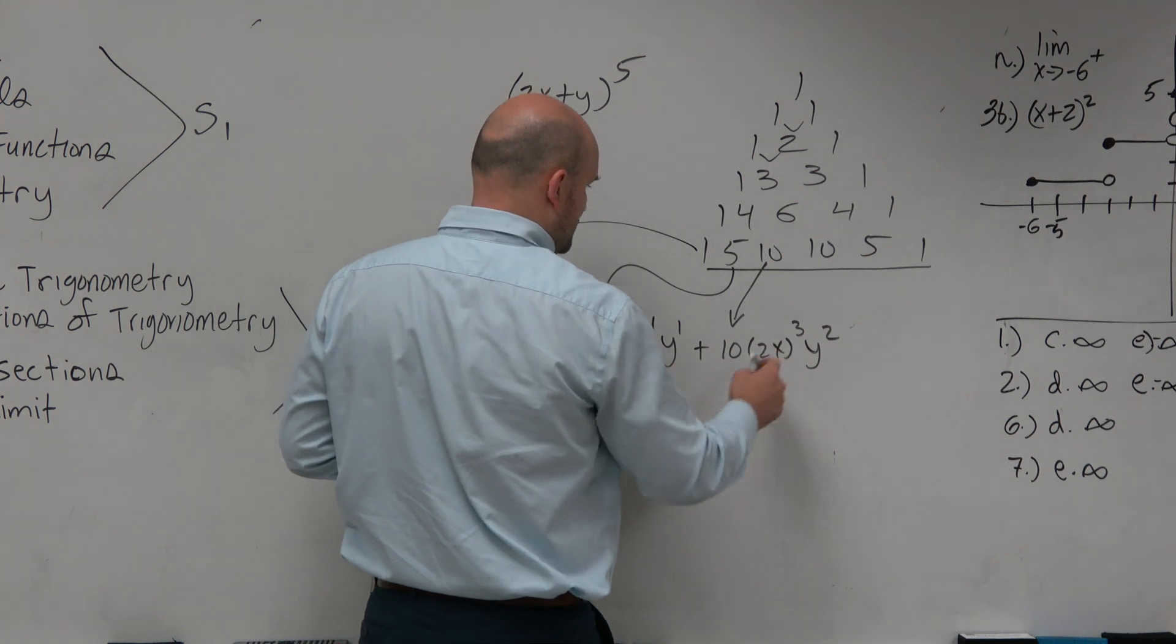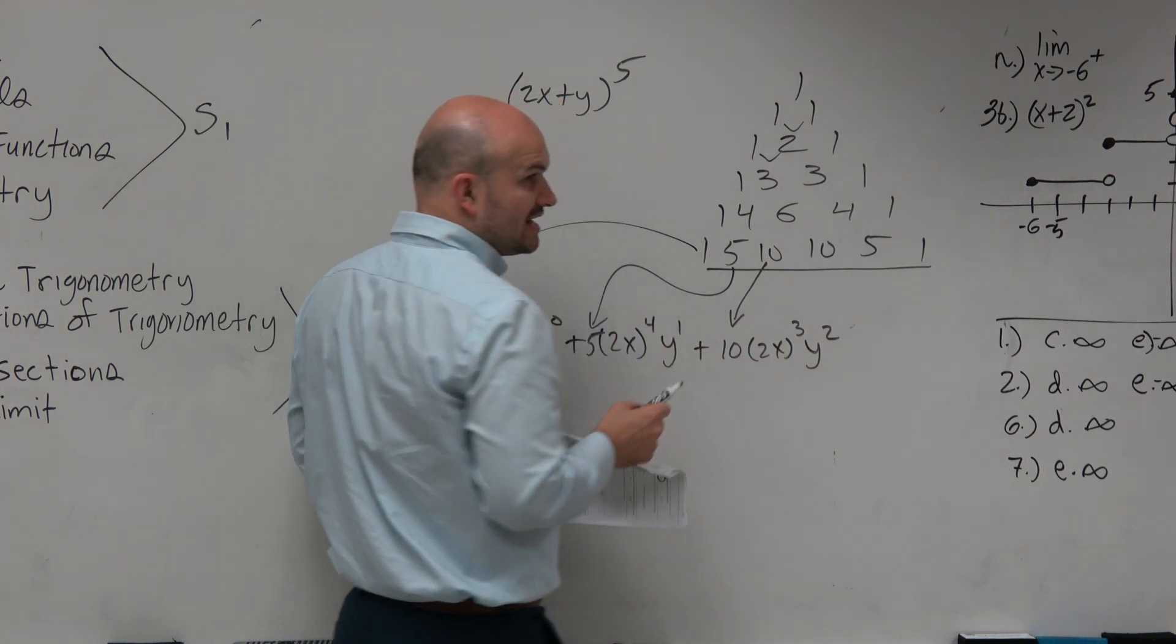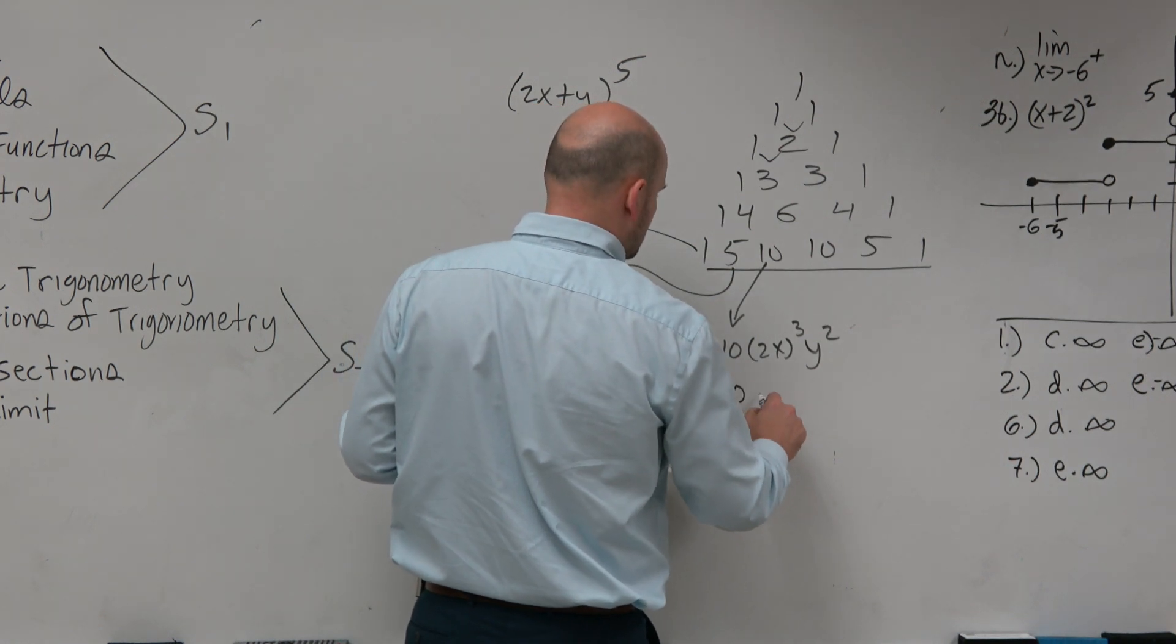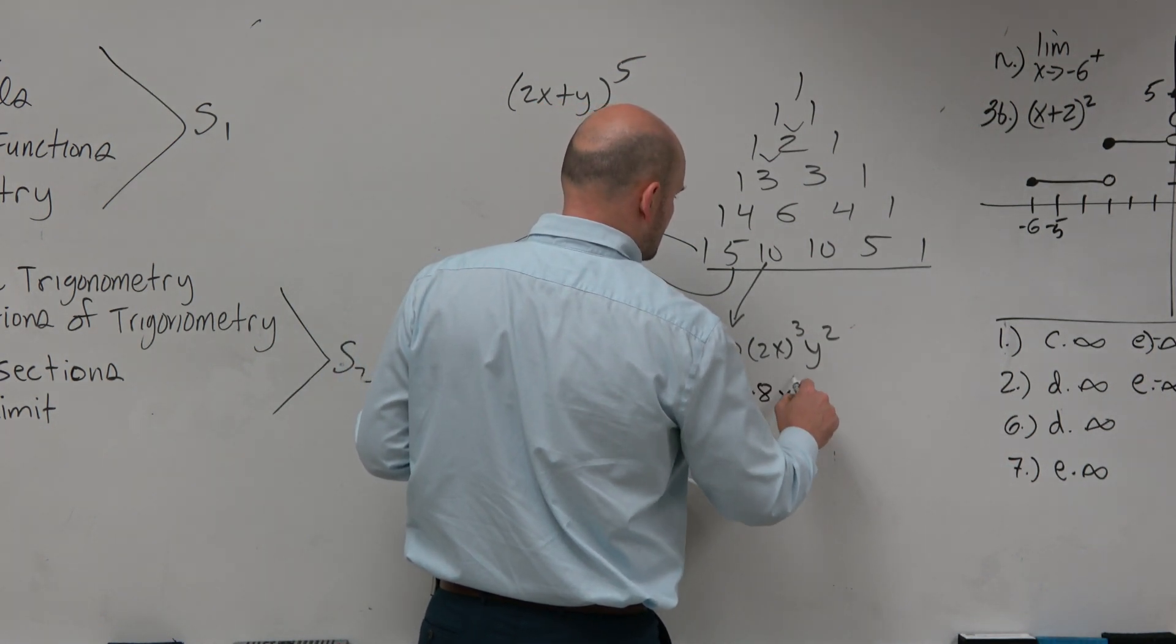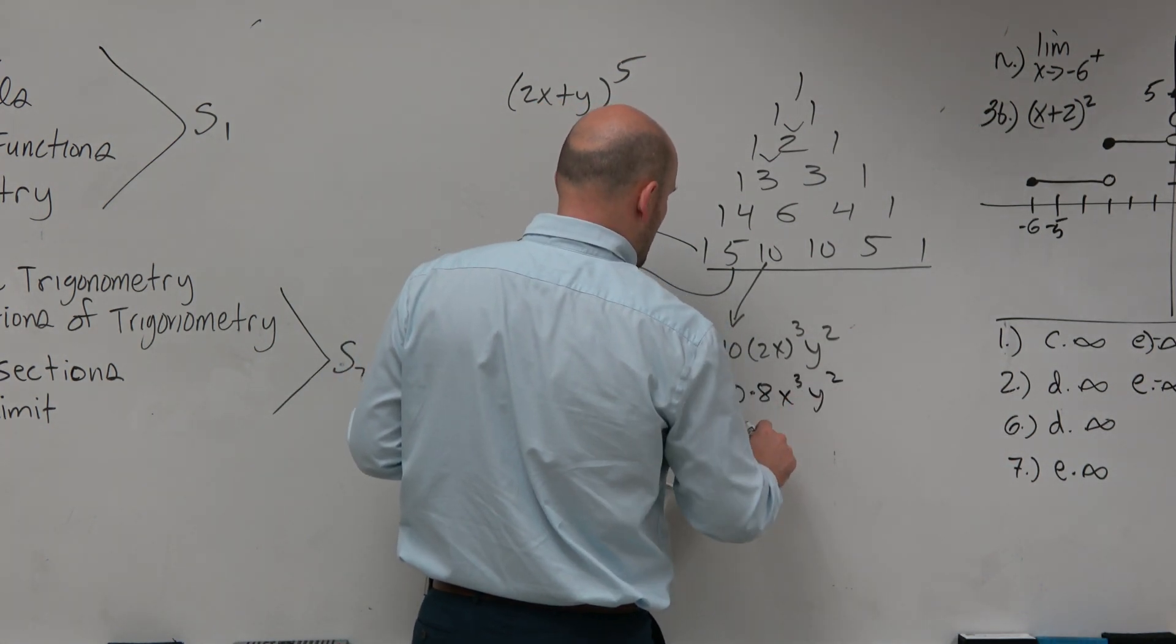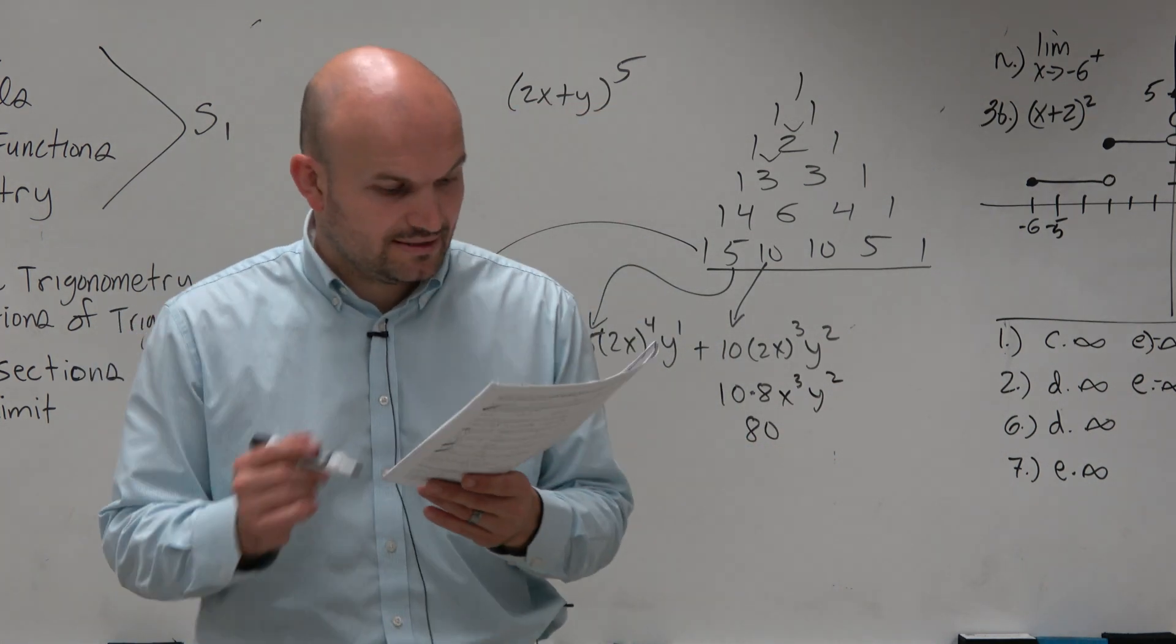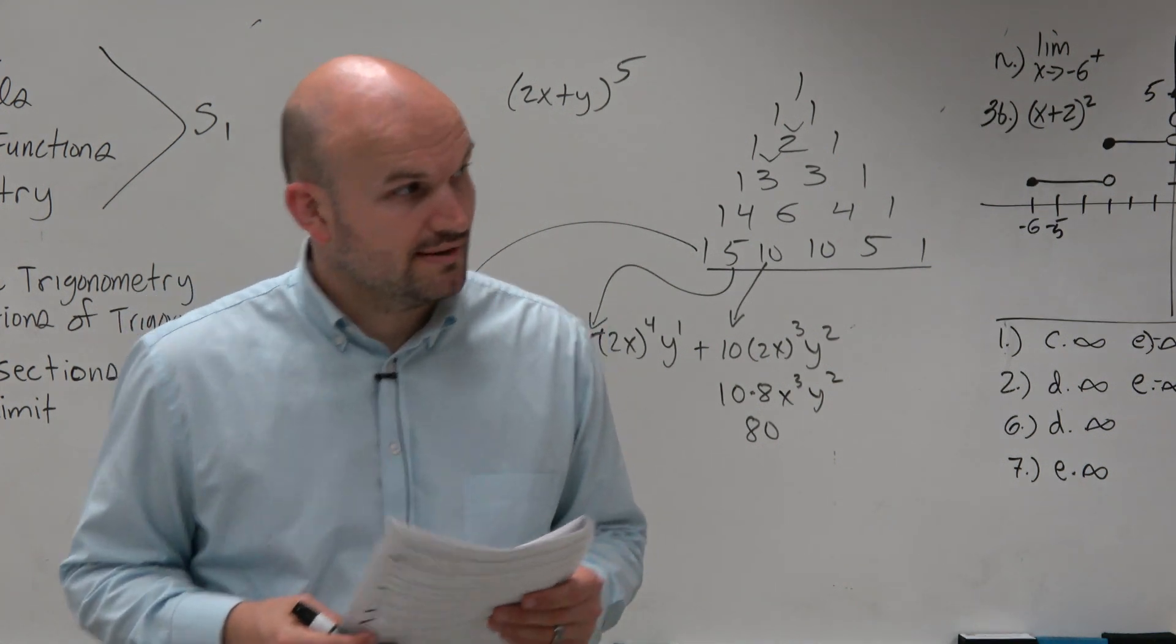So when I multiply this, just remember guys, that 2x cubed is 2x times 2x times 2x, which would be 8x cubed. And then we get 80. And that is the answer they're looking for, which was D. Okay?